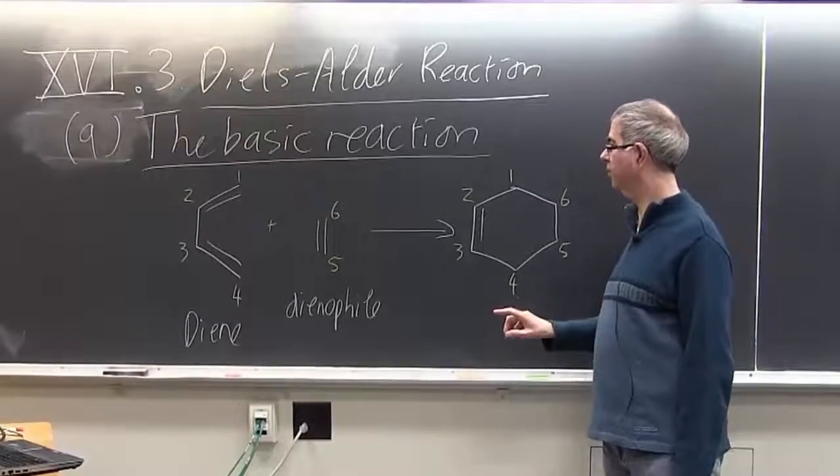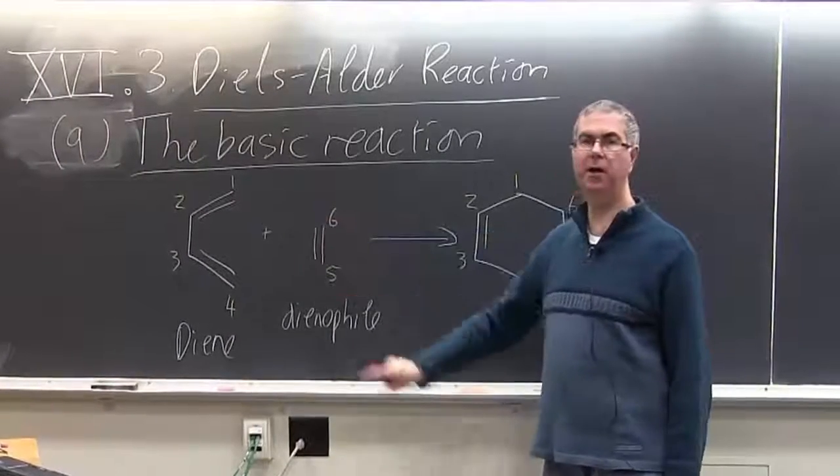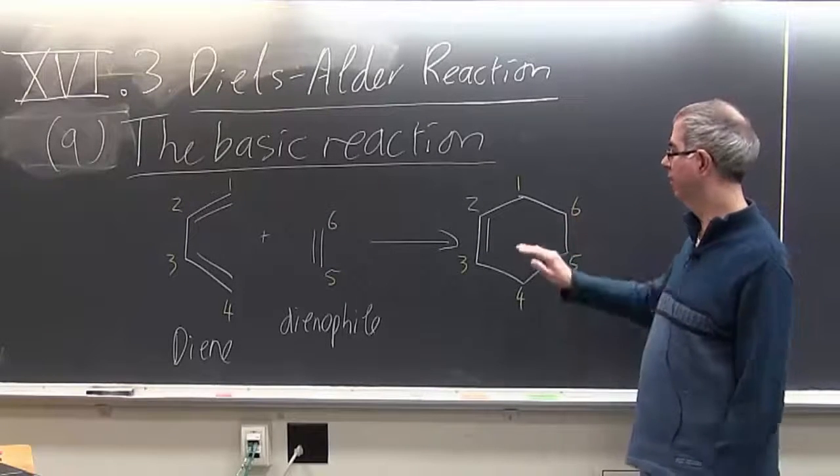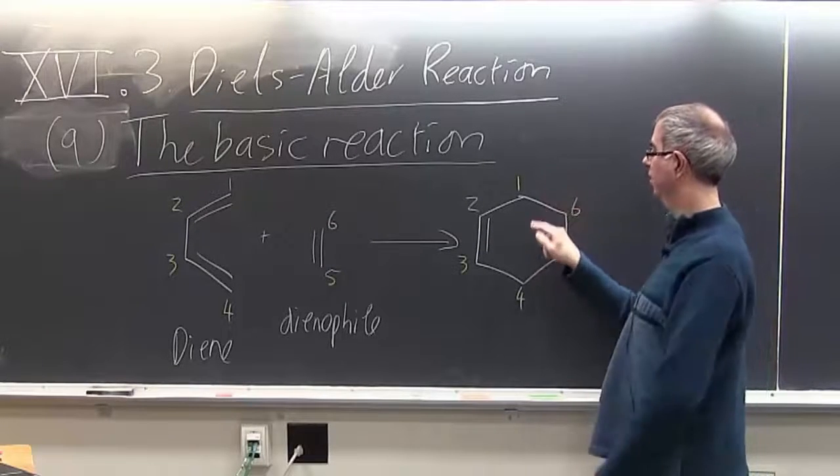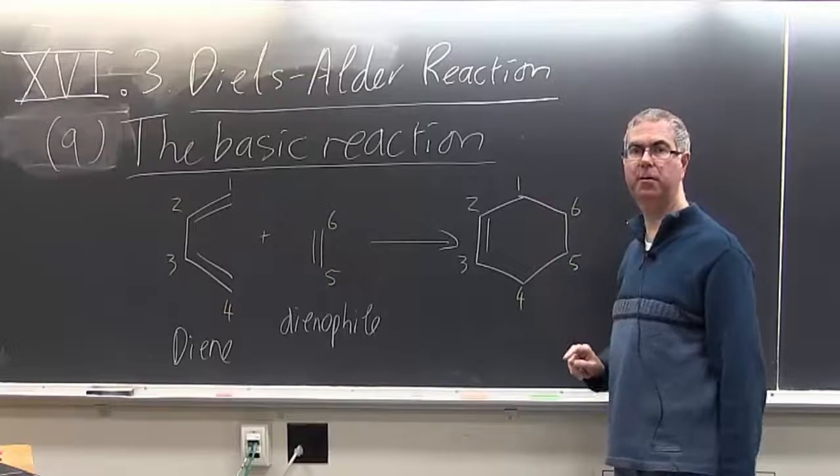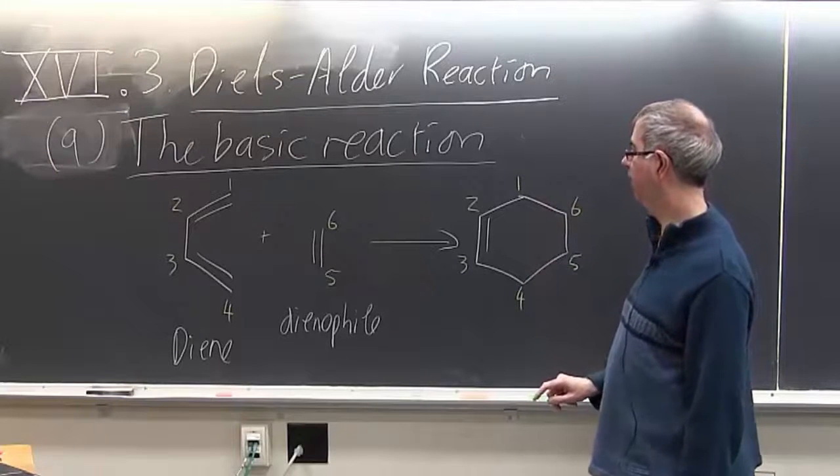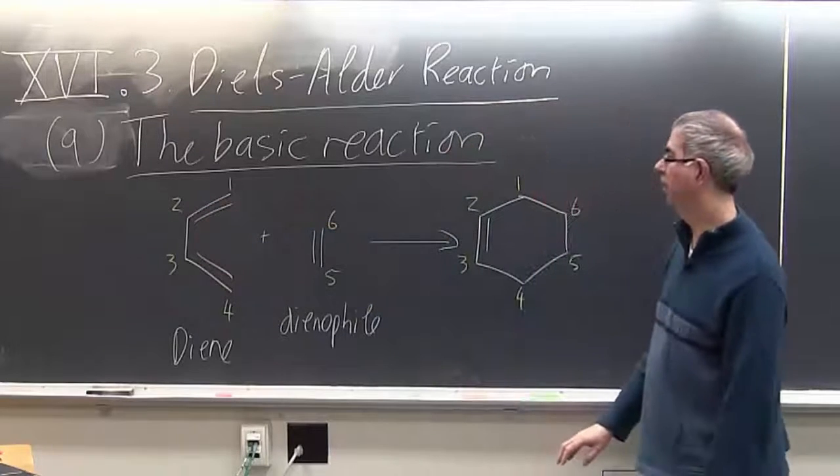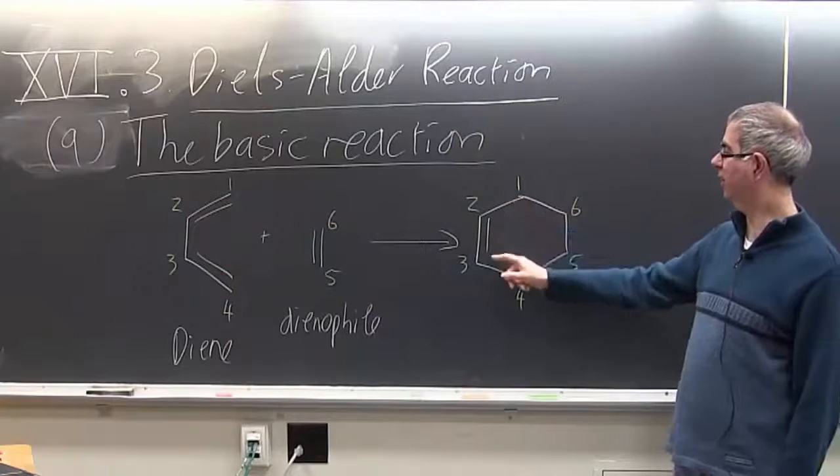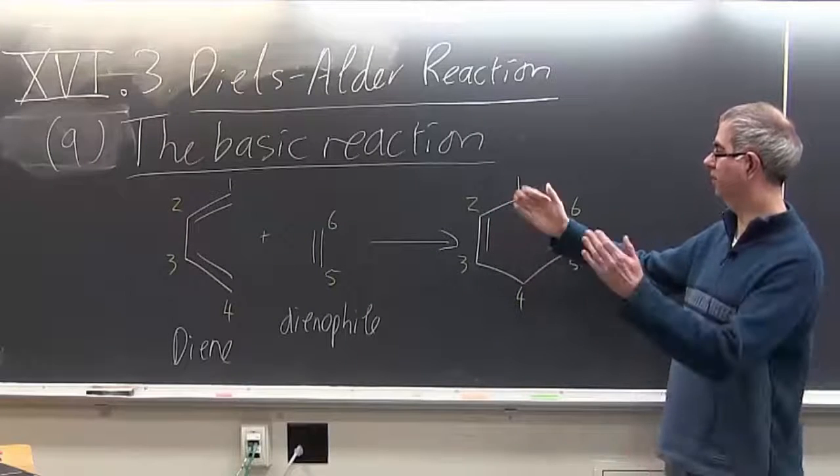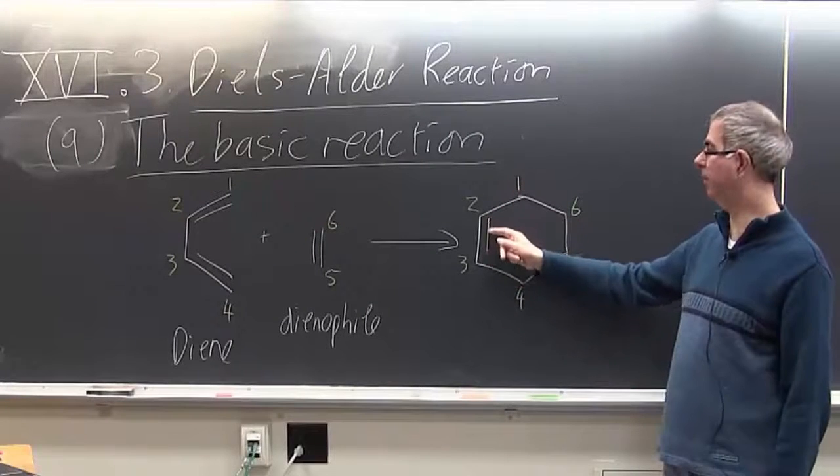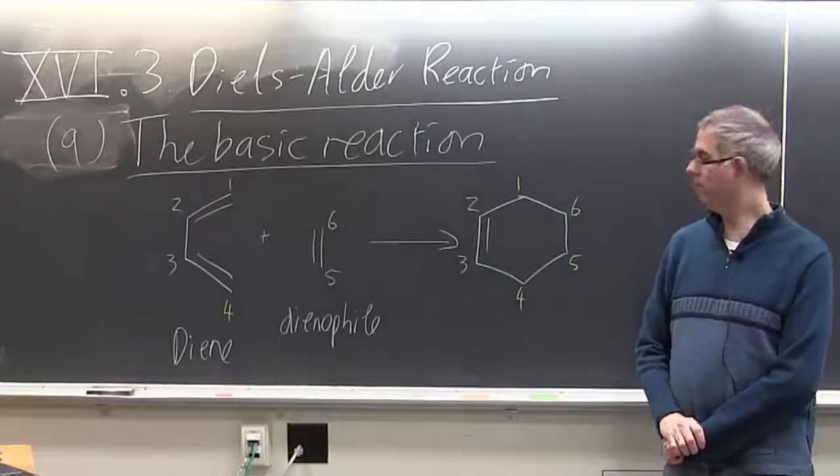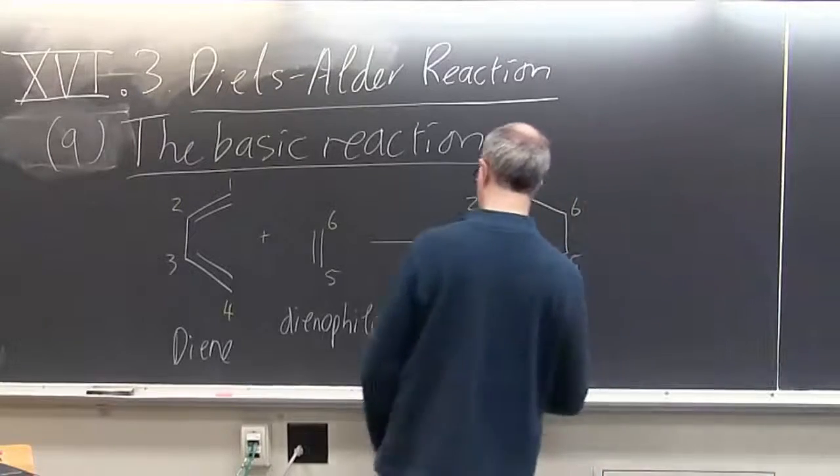And notice as well that we've lost the pi bond in the dienophile—it's gone. That was used to make these new sigma bonds here. And these two pi bonds that were in the original diene fold back and form a single pi bond between carbons two and three. So we get a six-membered ring product.